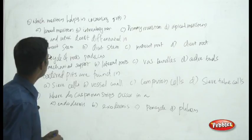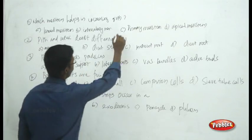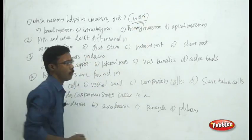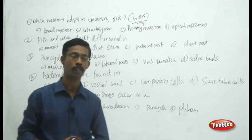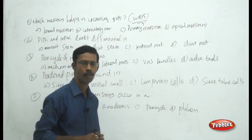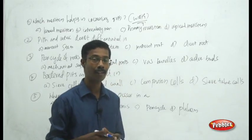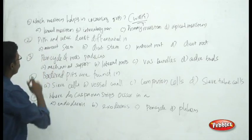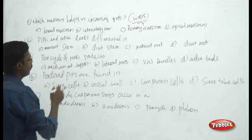The first question: which meristem helps in increasing the girth of the plant? Girth refers to width. As discussed when covering meristems — primary and secondary — in dicots there is an increase in girth by means of certain meristems. The question asks which meristem is responsible.